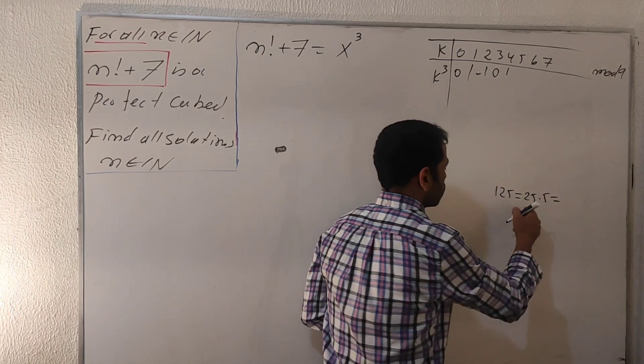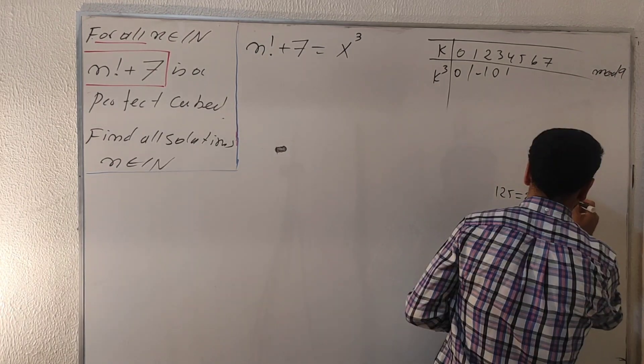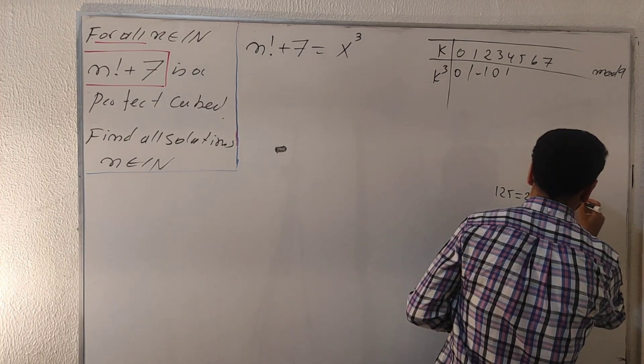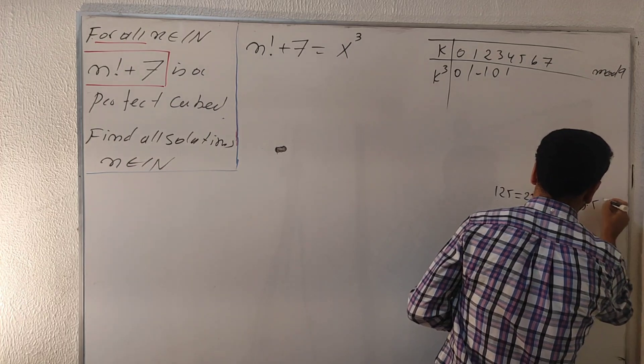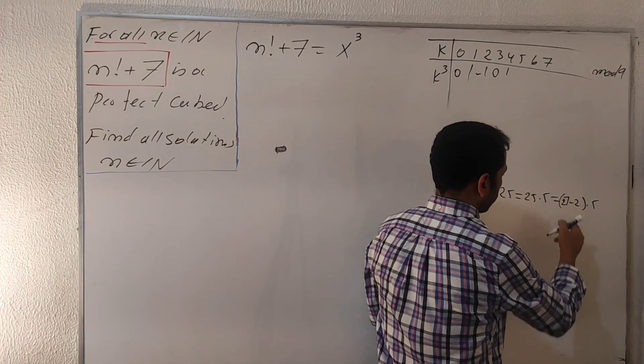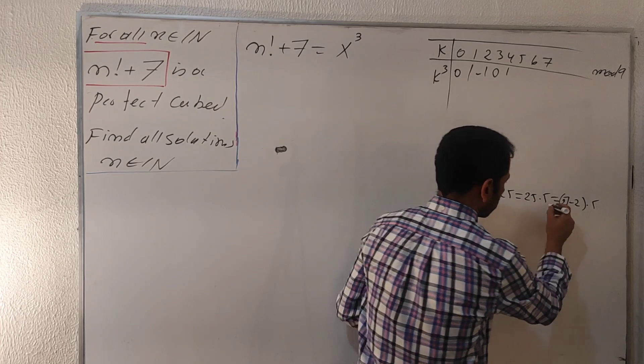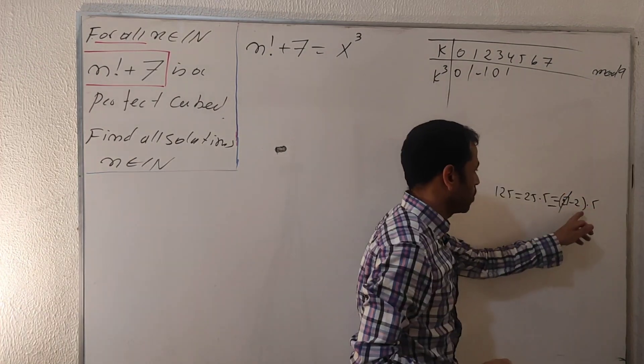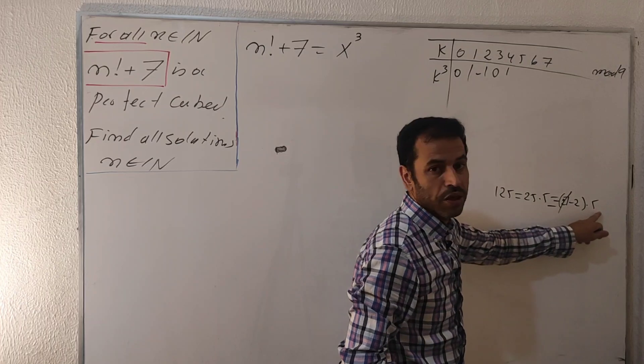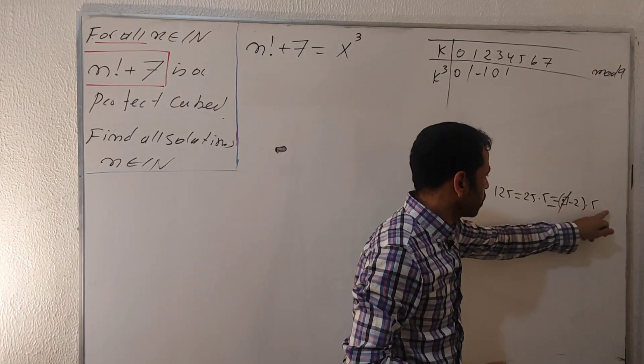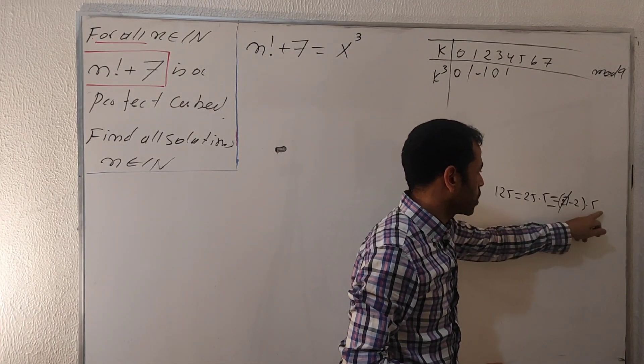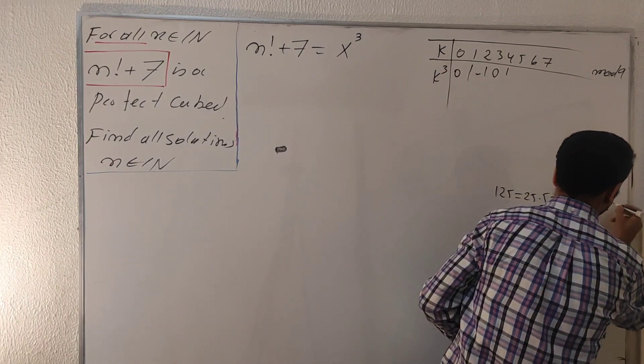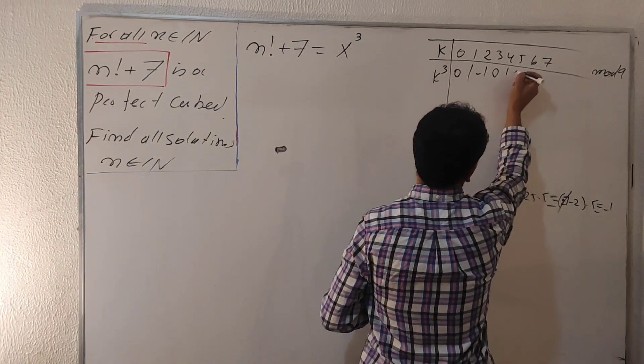We know 25 is 27 minus two, multiplied by five. If you reduce this one to mod 9, 27 will be zero. We're left with minus two multiplied by five, which is minus 10. If I add nine on both sides, I get minus one. This one is congruent to minus one mod nine. So let's put here minus one.